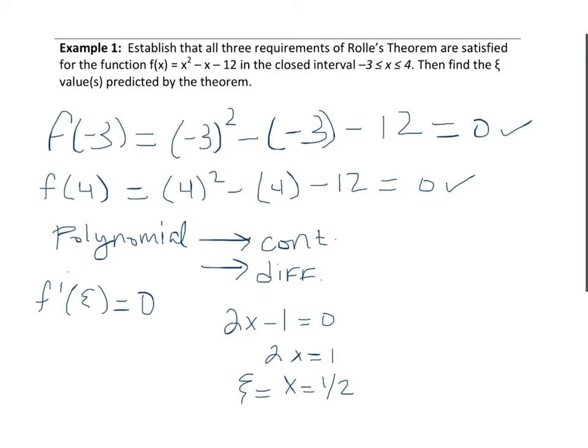Now, we might have had other values for C, but it's important to note that the value that we find, or the values that we will accept, must be within the closed interval between negative 3 and 4. And in this case, 1 half lies in between negative 3 and 4. So this is a value for C that we can accept.